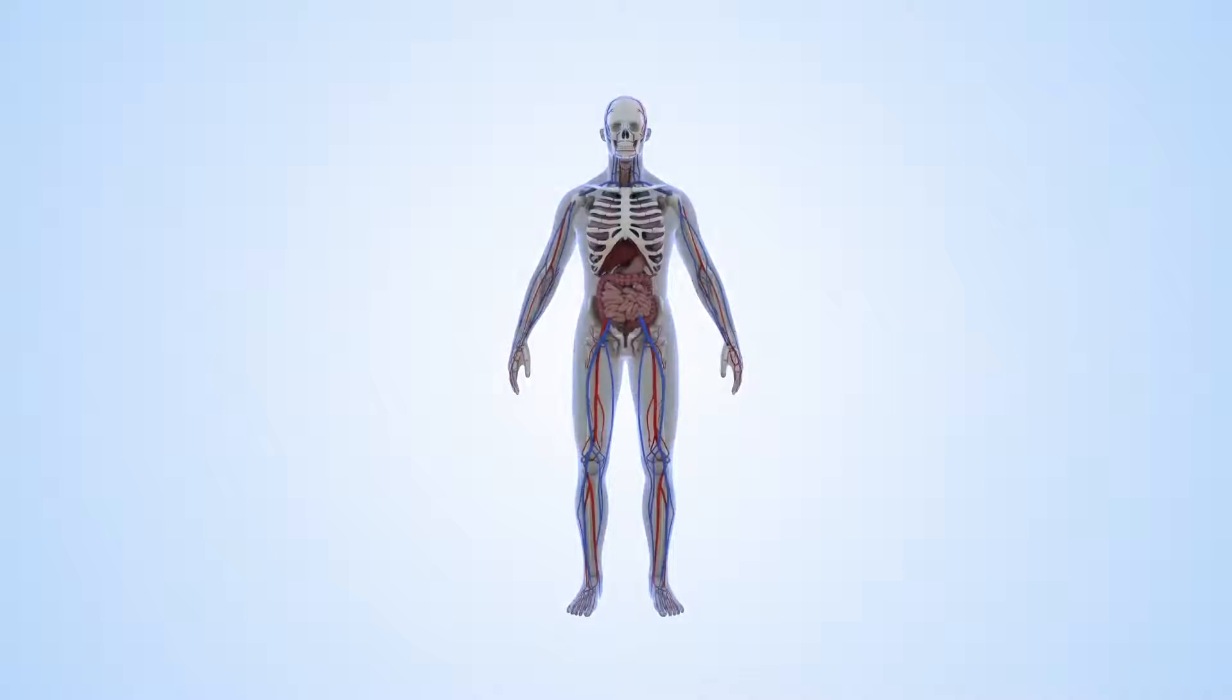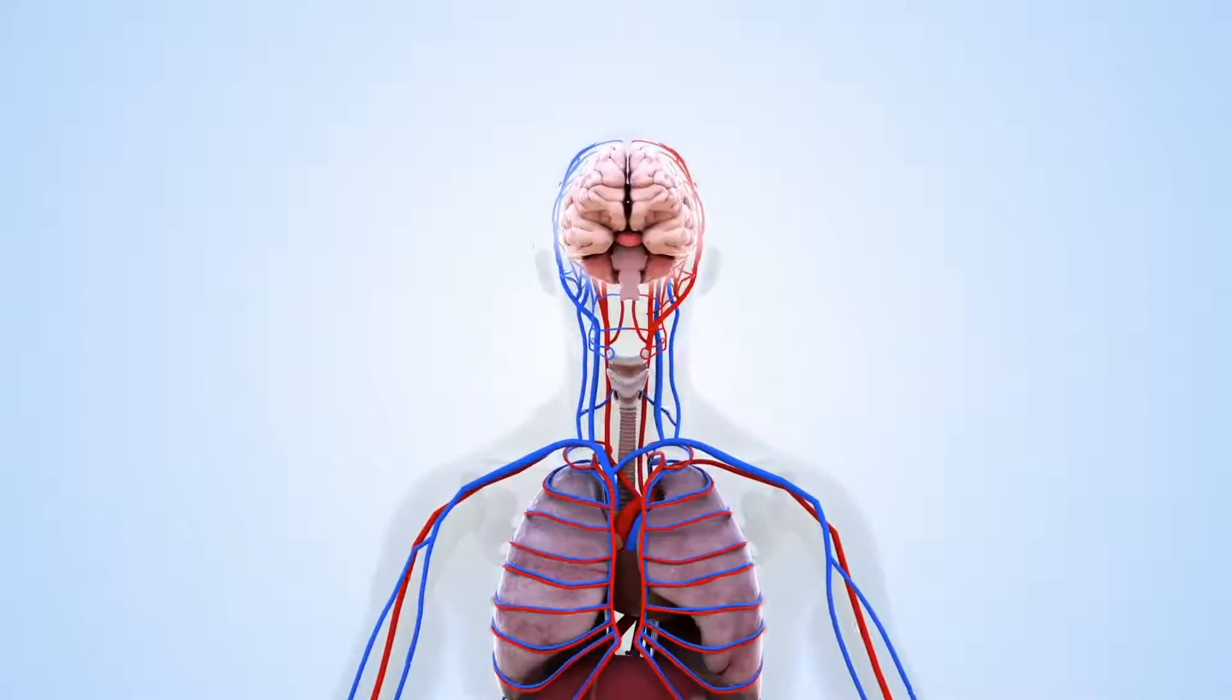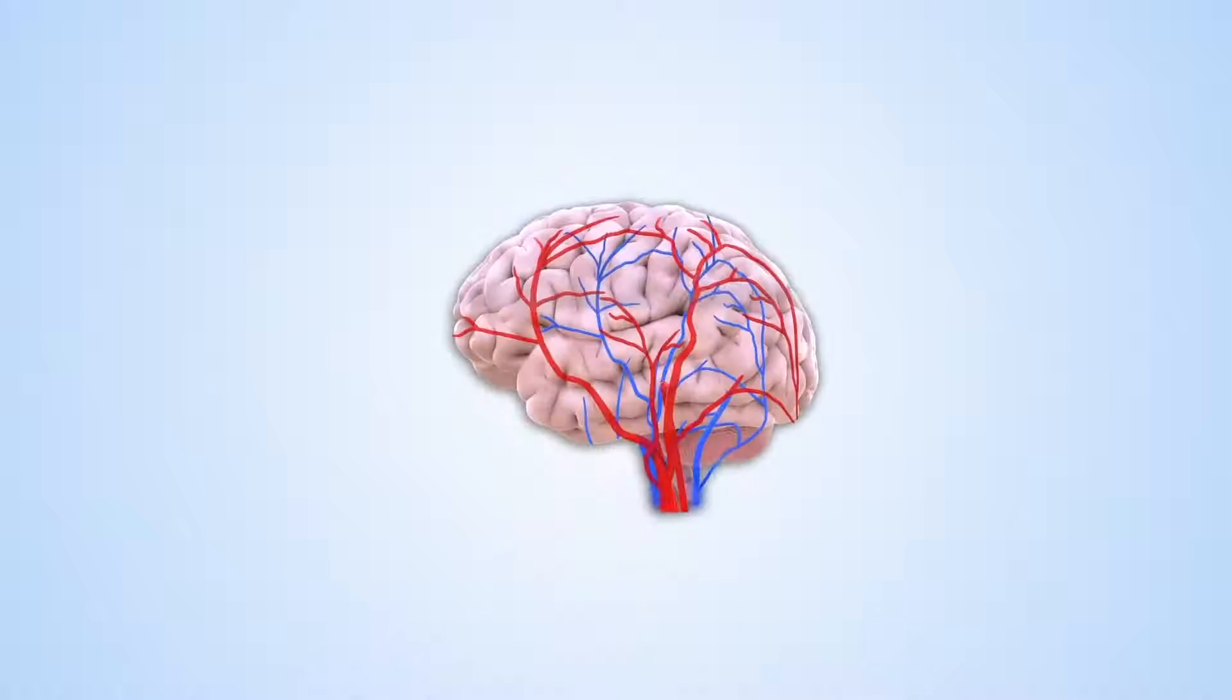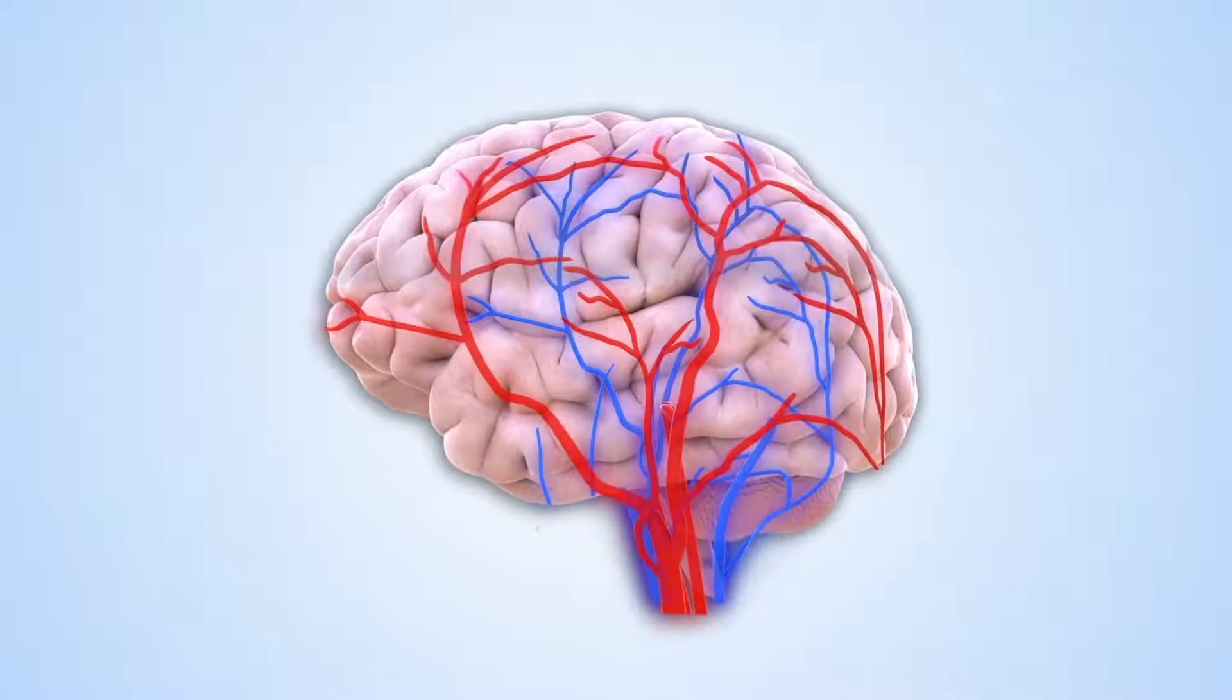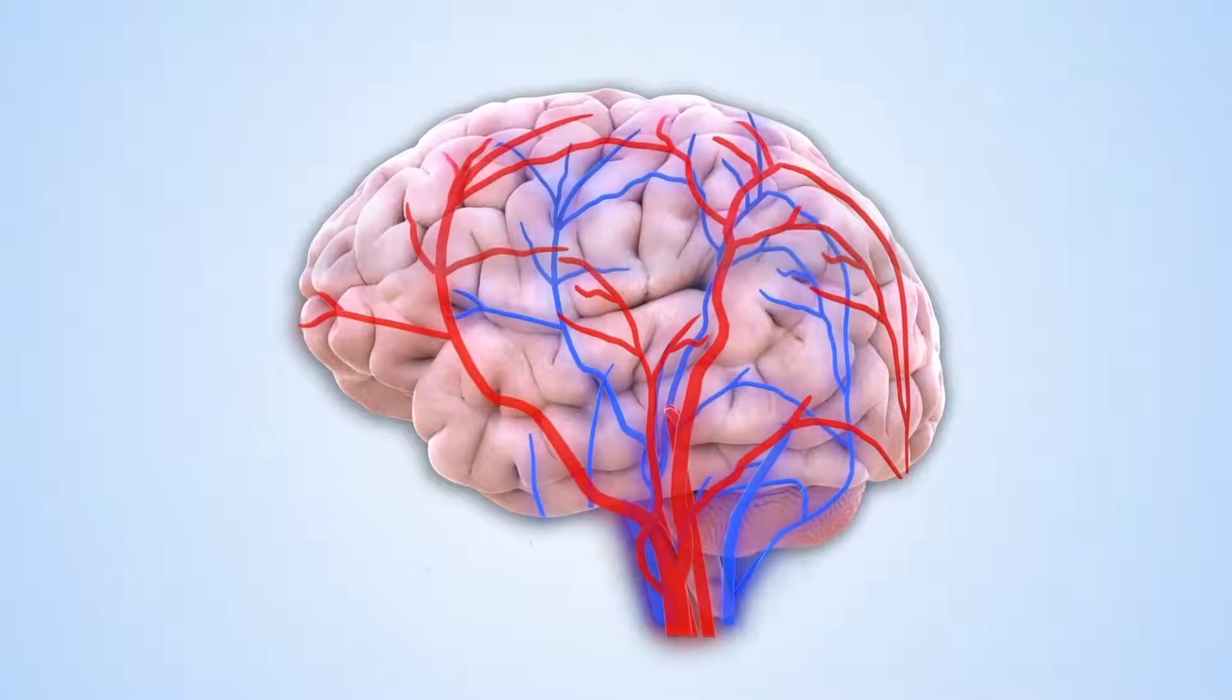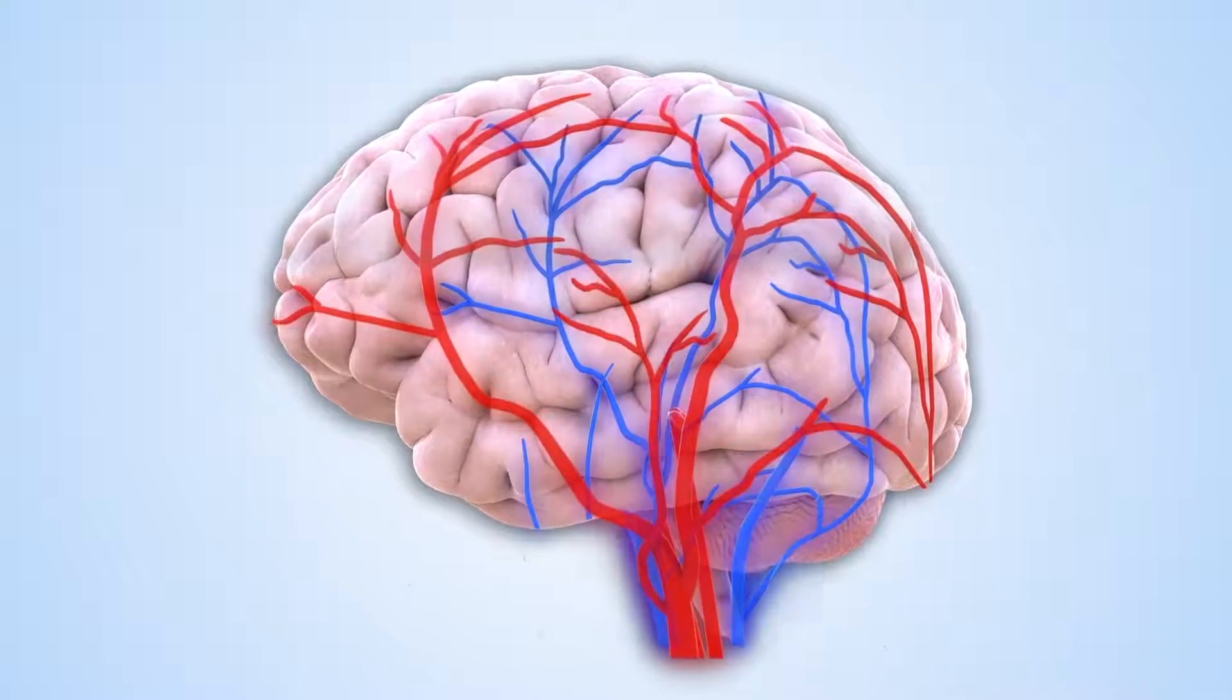Our brain is an essential organ which controls everything we do, think, and feel. Key to the brain's function is the constant supply of vital oxygen, along with the supply of nutritive blood. Without a steady supply of blood, brain cells will die.